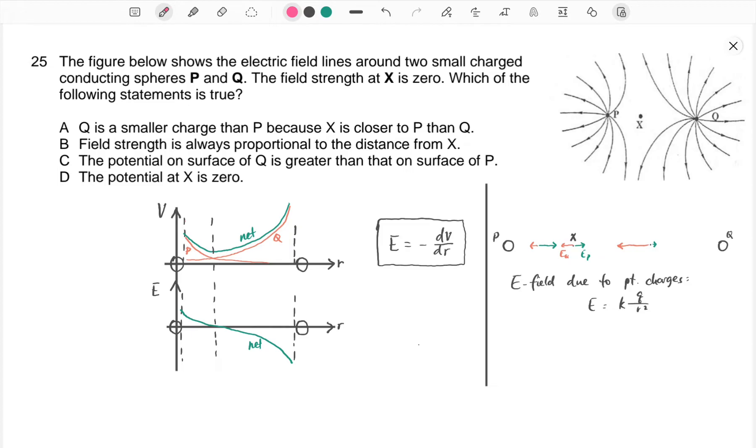And how do we understand the fact that at point X, the field strength is zero, and relate it to the size of the charges on both spheres?